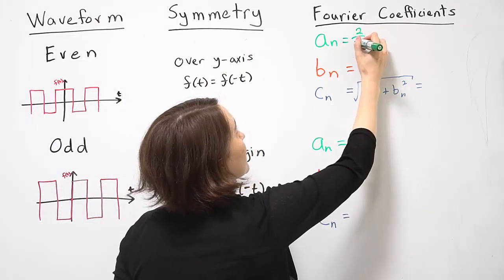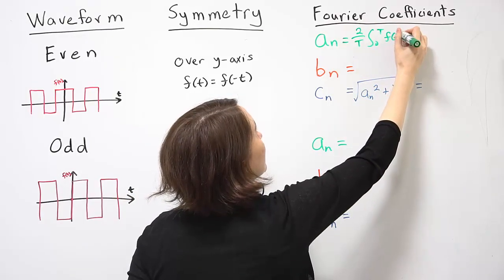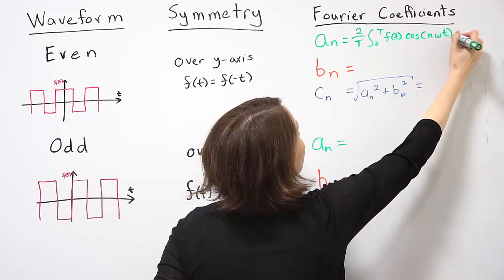So let's just rewrite our definition: 2/T, integral from 0 to T, our function times cosine of n omega t dt.